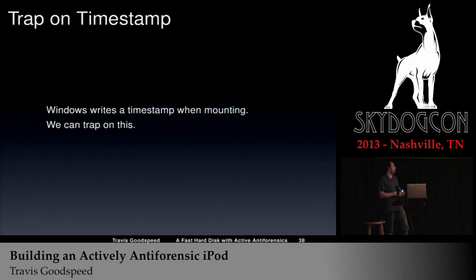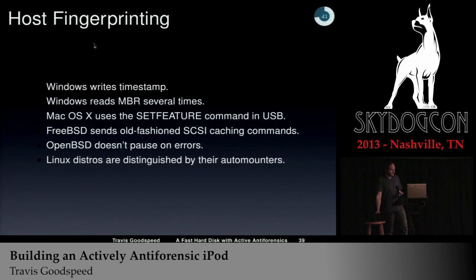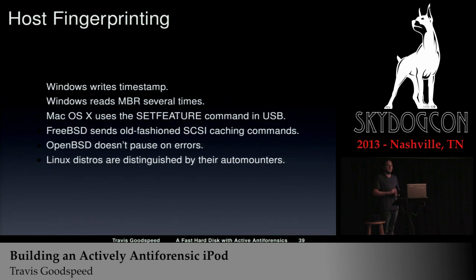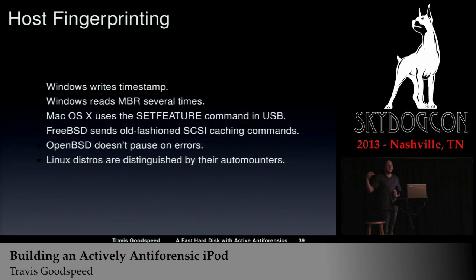You can also trap on the timestamp — Windows writes a timestamp to the file system when it mounts it, so if you see that timestamp being written, you know the host is Windows and mounting rather than copying it. You can fingerprint the host: Windows writes a timestamp and reads the master boot record nine times; OSX uses a weird USB command called setfeature that no other operating system uses; FreeBSD sends really old-fashioned SCSI commands because its SCSI infrastructure is tied directly to the USB infrastructure; OpenBSD does not pause on errors so it's much faster for working with a USB device.